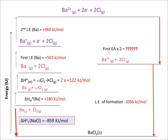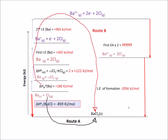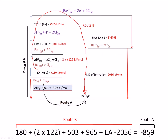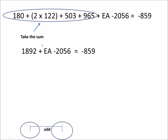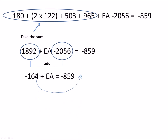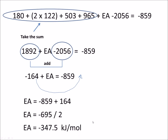Importantly, once we work out the answer we should divide it by two to get the value for one chlorine. The lattice enthalpy of formation is given as minus 2056 kJ/mol. We have two routes to barium chloride; the energy change in Route B equals the energy change in Route A. Summing the known values, we move minus 164 to the right-hand side — it becomes positive — and add those numbers to get minus 695. Dividing minus 695 by 2 gives us the electron affinity for one chlorine: minus 347.5 kJ/mol.